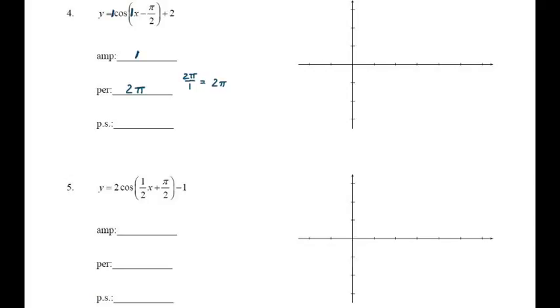In example 4 there's a cosine graph with a phase shift, and also a plus 2 at the end of the function, which means I shift the graph up 2. Identifying amplitude and period works exactly the same way — my amplitude is 1 (if nothing is written, there's a 1 there) and my period is 2π divided by 1, which is 2π. The phase shift is to the right π/2. The plus 2 moves my midline up to y = 2, so my graph lives above and below that new midline. Drawing a horizontal dotted line at y = 2 is a really good reference for sketching the rest of the graph.